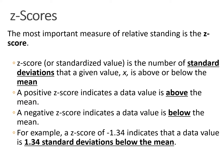The most prominent and well-known of all the measures of relative standing is something called a z-score. A z-score tells us the number of standard deviations that a given value, we'll call it x, is above or below the mean. If we have a positive z-score, that tells us that value is above the mean; a negative z-score means that it's below the mean.